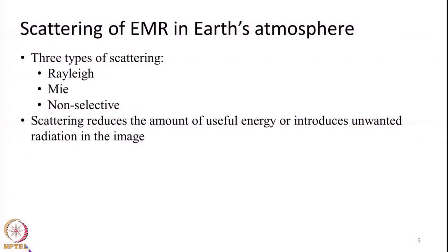Similarly, gas molecules present in the atmosphere such as CO₂ and water vapour will absorb some amount of radiation, altering its nature to some extent. So energy will be both absorbed and scattered. The scattering of EMR in the atmosphere can be classified into three types: Rayleigh scattering, Mie scattering, and non-selective scattering.